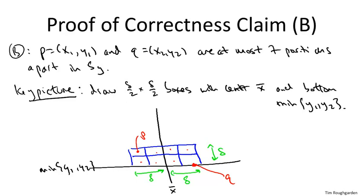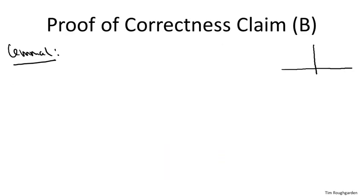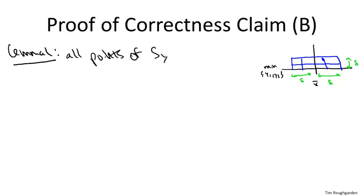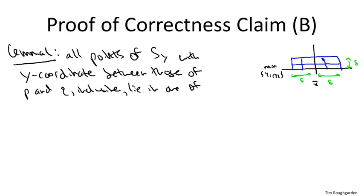Lemma 1 states that all points of S_Y with y-coordinate between those of P and Q must appear in this picture — they must lie in one of these eight boxes. We argue this in two steps: first that such points have y-coordinates within the relevant range between min(y1, y2) and delta more than that, and second that they have x-coordinates in the range X_bar ± delta.